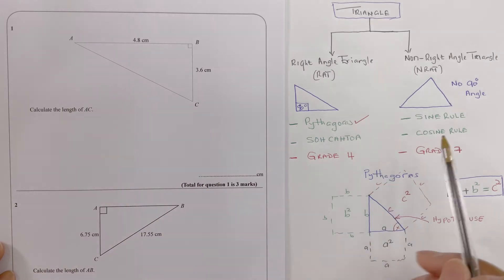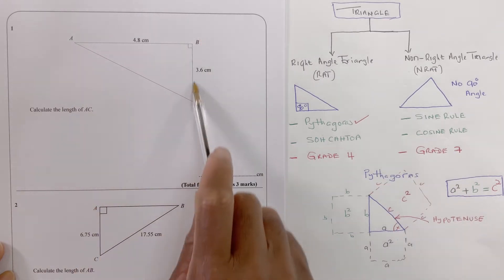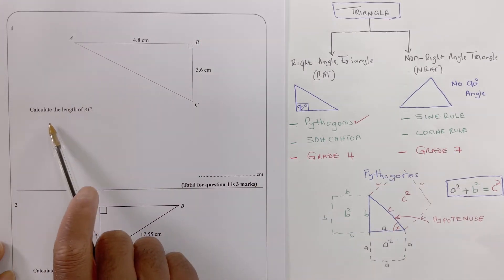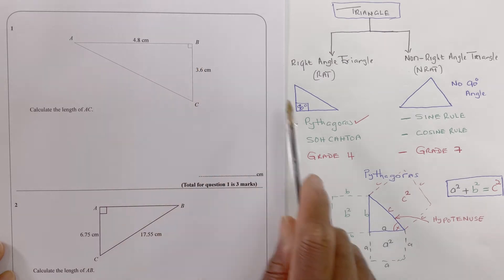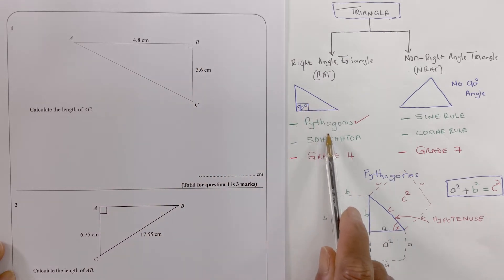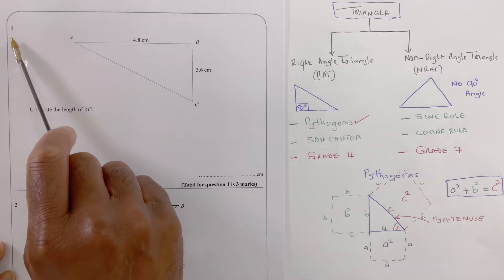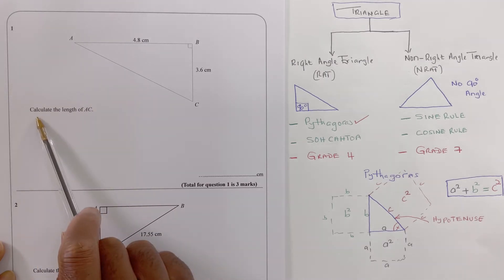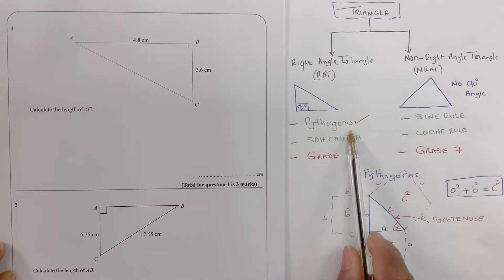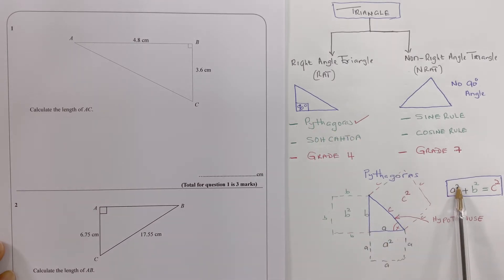For question one, we're looking at a right angle triangle, and because it's a right angle triangle, we can apply Pythagoras. We apply Pythagoras, which is the sum of a